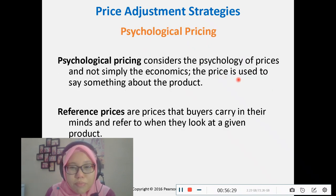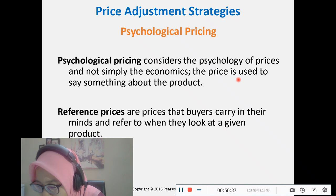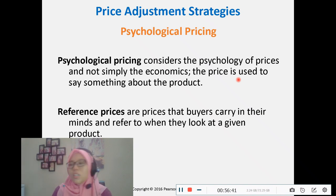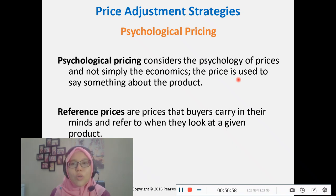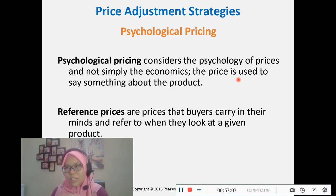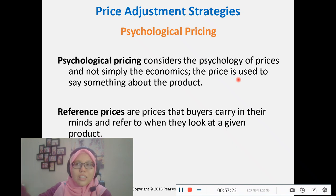Psychological pricing is based on how the customer perceives the price. The price is determined by what the customer finds acceptable. Referent pricing: a retailer places three products side by side — one high-priced item, one medium-priced item, and one lower-quality item — so that the customer uses the expensive item as a reference and perceives the middle product as good value.